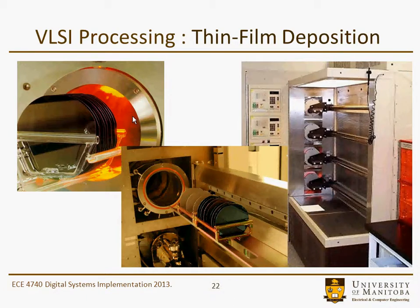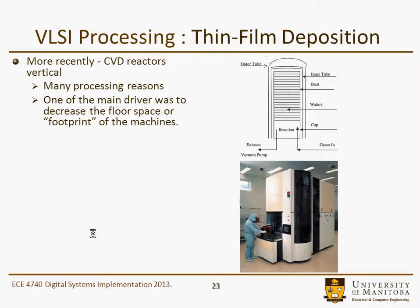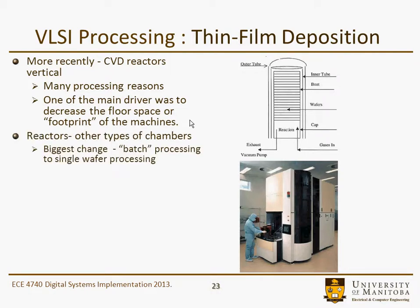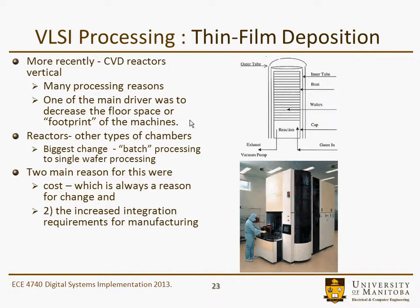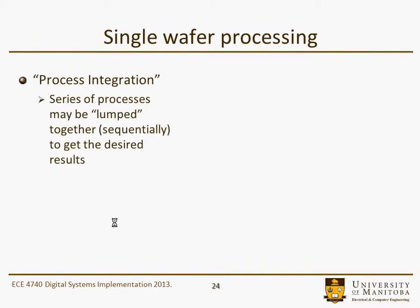Here's a picture of batch-based processing in a thermal oven — a batch of wafers heading into a furnace. More recently, CVD reactors have gone vertical, primarily to reduce the footprint of machines at the fabrication facility. Other changes include moving from batch to single-wafer processing, driven by cost and increased integration requirements. For example, you may want to integrate regular CMOS circuitry with embedded DRAM, which requires combining what were previously separate process flows — this is known as process integration, where a series of processes are sequenced together to achieve the desired result.